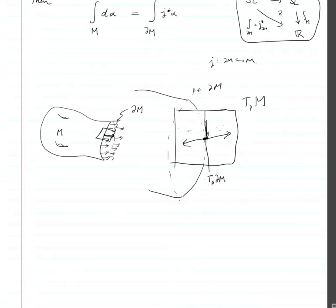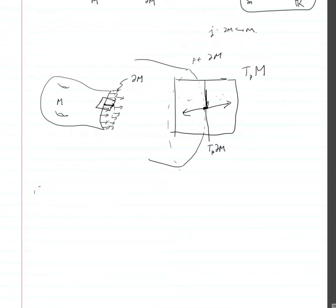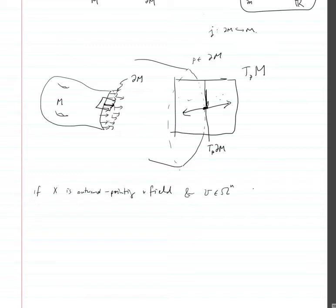The point is that if x is an outward pointing vector field and v is a volume form on m, then we can take this vector and plug it in. We can do the interior product on v, and this will be an n-1 form on m.